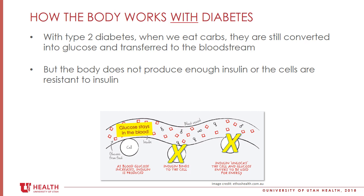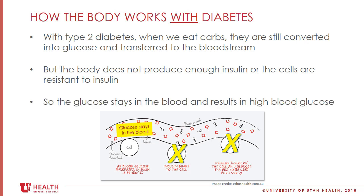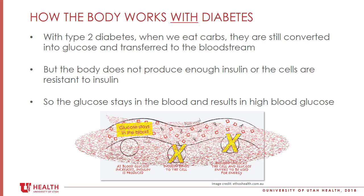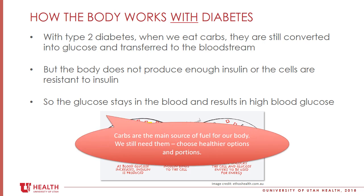How does the body work with diabetes? With type 2 diabetes, when we eat carbs, they are still converted into glucose or sugars and transferred to the bloodstream. However, since the body does not produce enough insulin, or if the cells are resistant to insulin, that sugar stays in the blood, resulting in high blood sugar. Our goal with prediabetes is to reduce the insulin resistance so that sugar leaves the bloodstream and enters the cell to be used for energy. Remember, carbohydrates are important — they are the main source of fuel for our body. It's just important that we choose those healthier options.